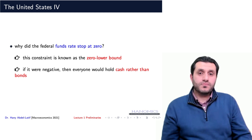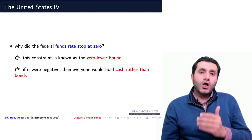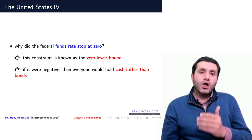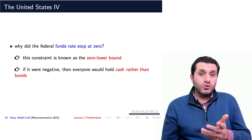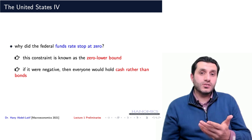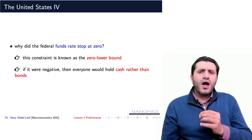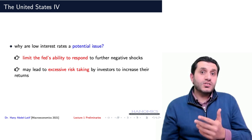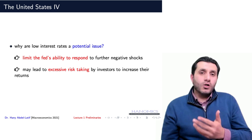Why is this the case? Because if the interest rate were negative, everyone would hold cash rather than bonds. Suppose you have two options: holding cash, which is liquid but has zero returns, or holding bonds, which are less liquid but yield a positive return. Negative interest rates mean that everyone would prefer zero returns to negative returns — in other words, prefer holding cash over bonds. But why are low interest rates a potential issue? Because it limits the central bank's ability to respond to further adverse shocks. It may also lead to excessive risk-taking behavior by investors to increase their returns.